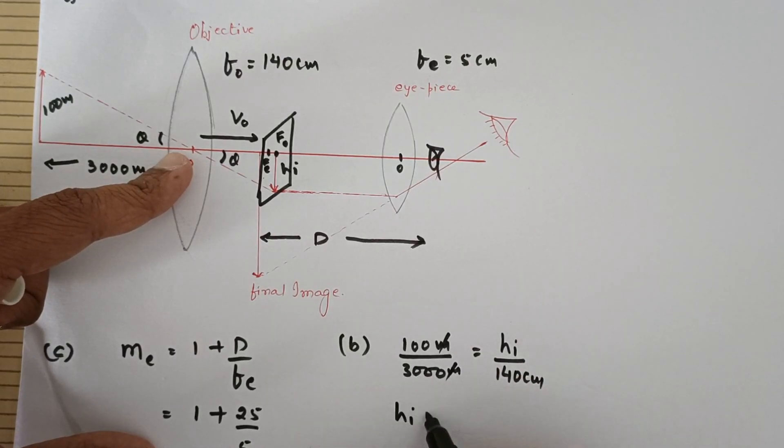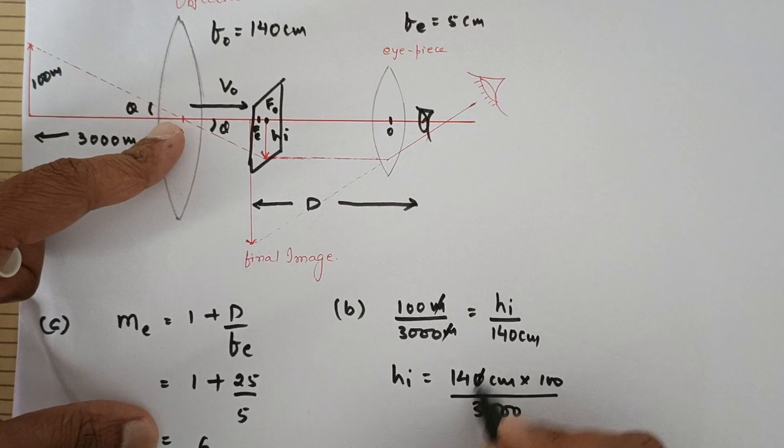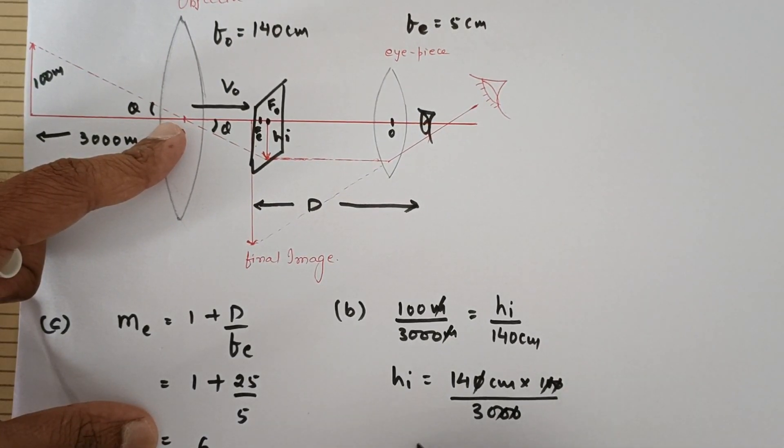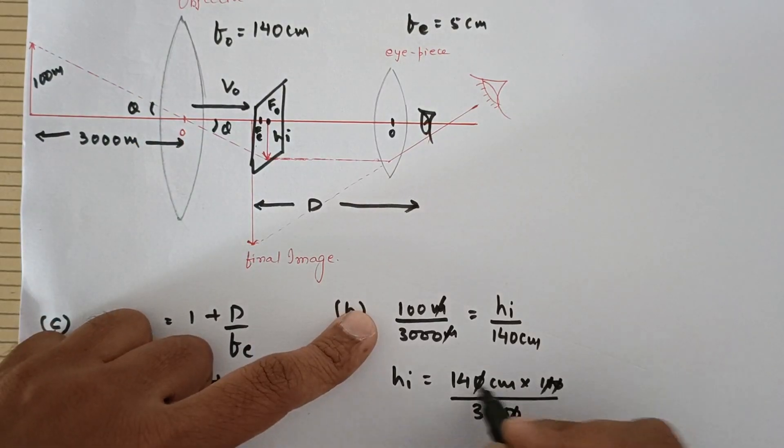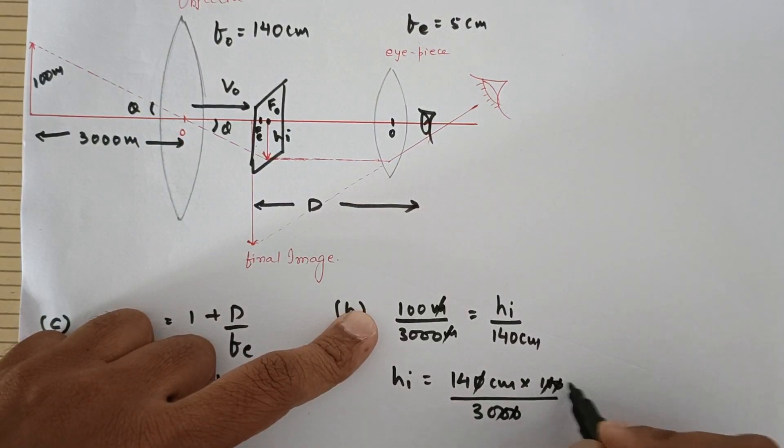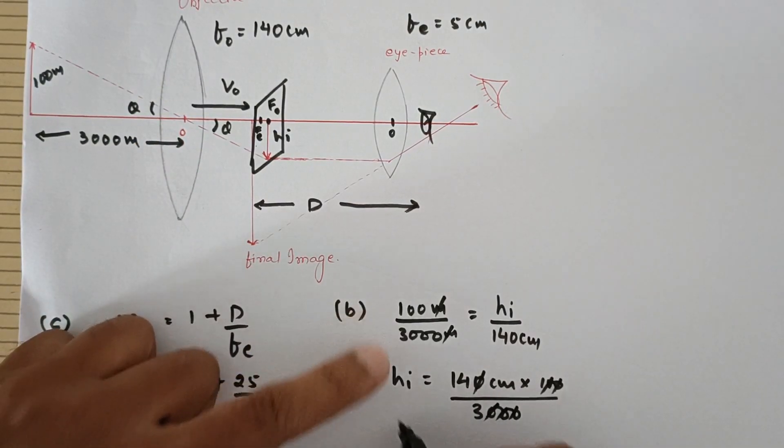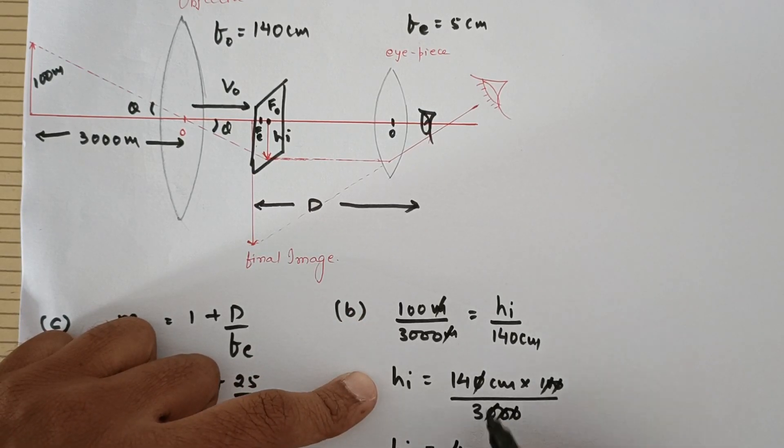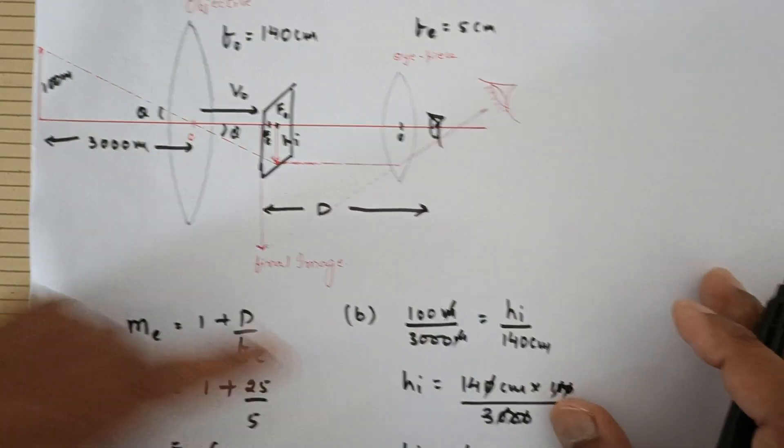So hᵢ is equal to 140 centimeters into 100 divided by 3000. Now 00 cut, 00 cut once again, so this is 100, so two zeros and one, so three zeros. So the height of the image is roughly about 4, 3 ones are 3, 4s are... so approximately 4.7 centimeters.